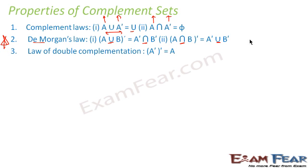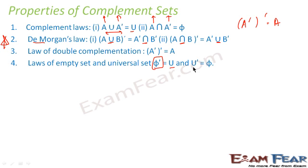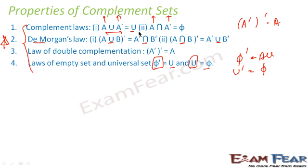There is also the double complementation law: if you complement A and then complement it again, you get A back. Also, phi complement equals U and U complement equals phi. If there are no elements and you complement, you get all elements (U). If you take all elements and complement, you get no elements (phi).